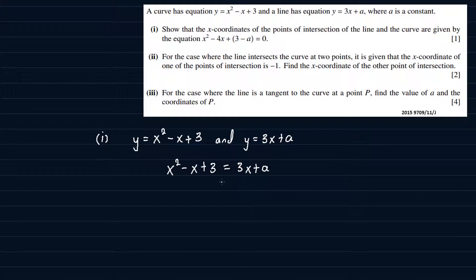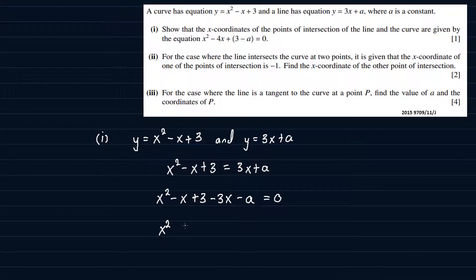If we subtract 3x from both sides and a from both sides, we get x squared minus x plus 3 minus 3x minus a is equal to 0. Grouping the terms: x squared is the only term in x squared. For the terms in x, we have minus x and minus 3x, so minus x minus 3x gives minus 4x. For the constants, we have 3 minus a. And it's all equal to 0.